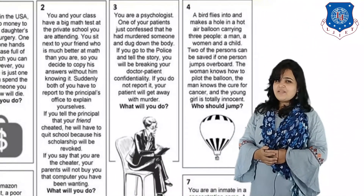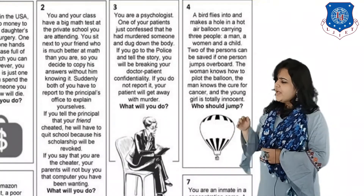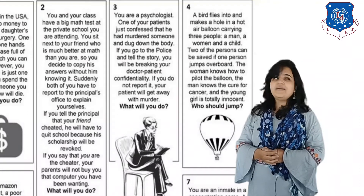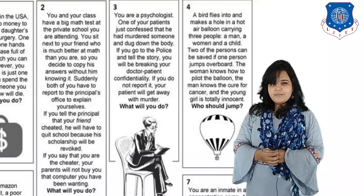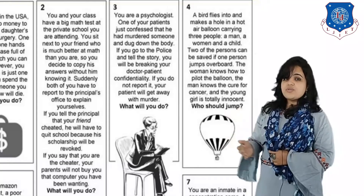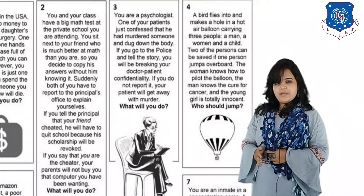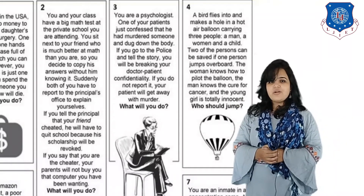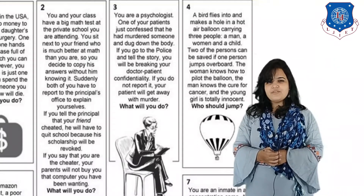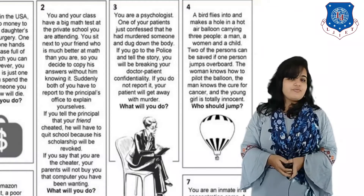The second dilemma is one we have all faced at least once in our lifetime. There were two students — one of them knew that the student sitting beside was far more intelligent, so he decided to copy the math test from him. Thanks to the cameras, they both got caught and were called to the principal's office. The student knew that if he reported both were involved in copying, the innocent intelligent student might lose his scholarship. But if he said he alone was cheating, he might not get the computer his dad promised.